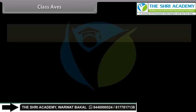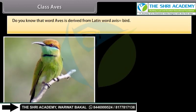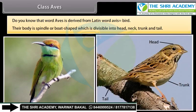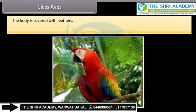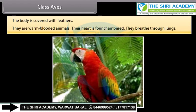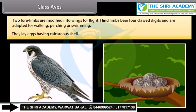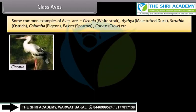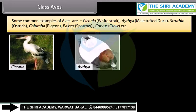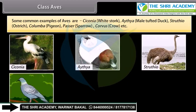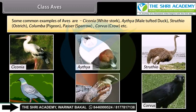Class Aves. The word Aves is derived from the Latin word avis, meaning bird. Their body is spindle or bolt-shaped, divisible into head, neck, trunk, and tail. The body is covered with feathers. They are warm-blooded animals. Their heart is four-chambered. They breathe through lungs. Two forelimbs are modified into wings for flight. Hindlimbs bear four clawed digits and are adapted for walking, perching, or swimming. They lay eggs having a calcareous shell. Common examples are Ciconia (white stork), Aythya (tufted duck), Struthio (ostrich), Columba (pigeon), Passer (sparrow), and Corvus (crow).